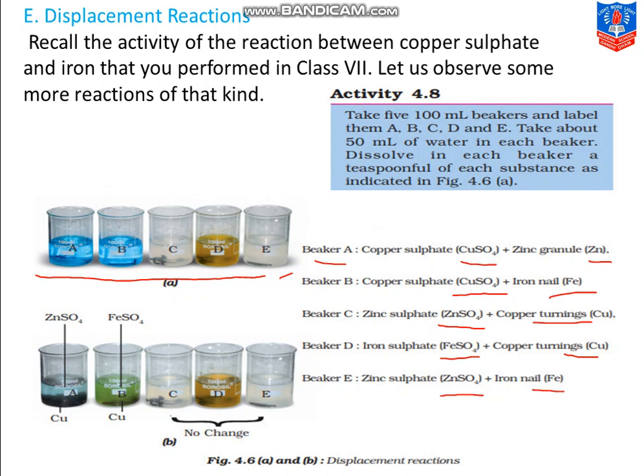So before that, take about 50 ml of water in each beaker. In each beaker, dissolve a teaspoonful of each substance as indicated in figure 4.68. Beakers A and B need copper sulfate solution; beaker D needs iron sulfate; and beaker E needs zinc sulfate. After mixing these things in the beakers, keep them undisturbed for some time — don't touch, mix, or shake them. Just leave them undisturbed, let the reaction take place, and then record your observations.